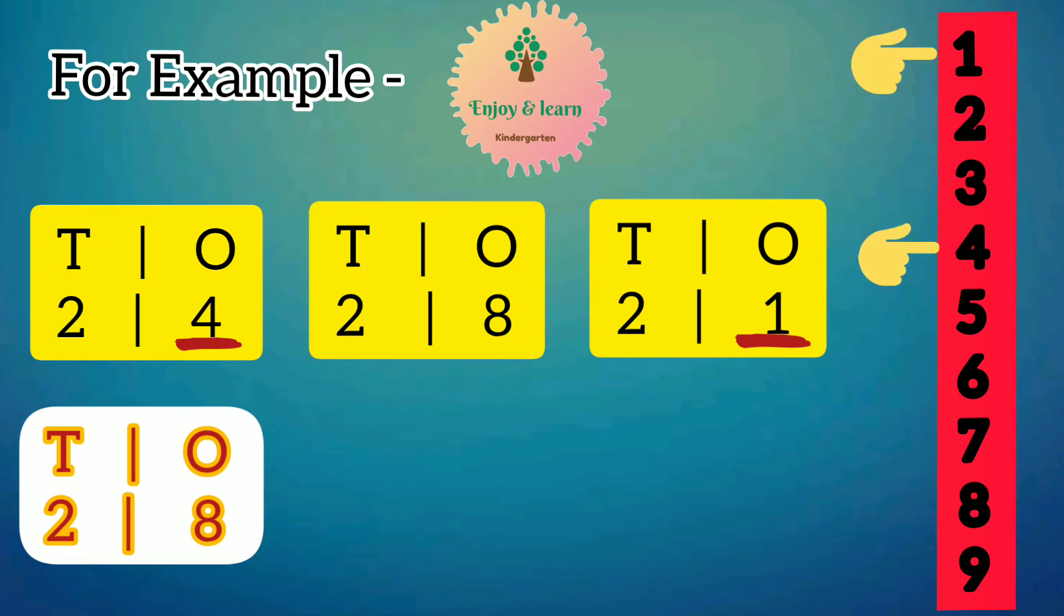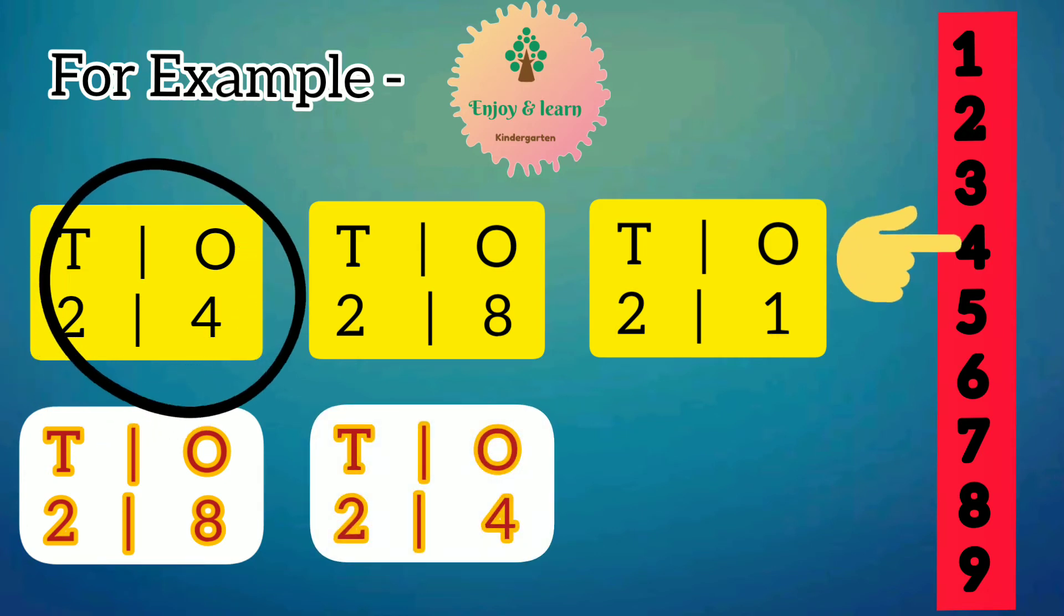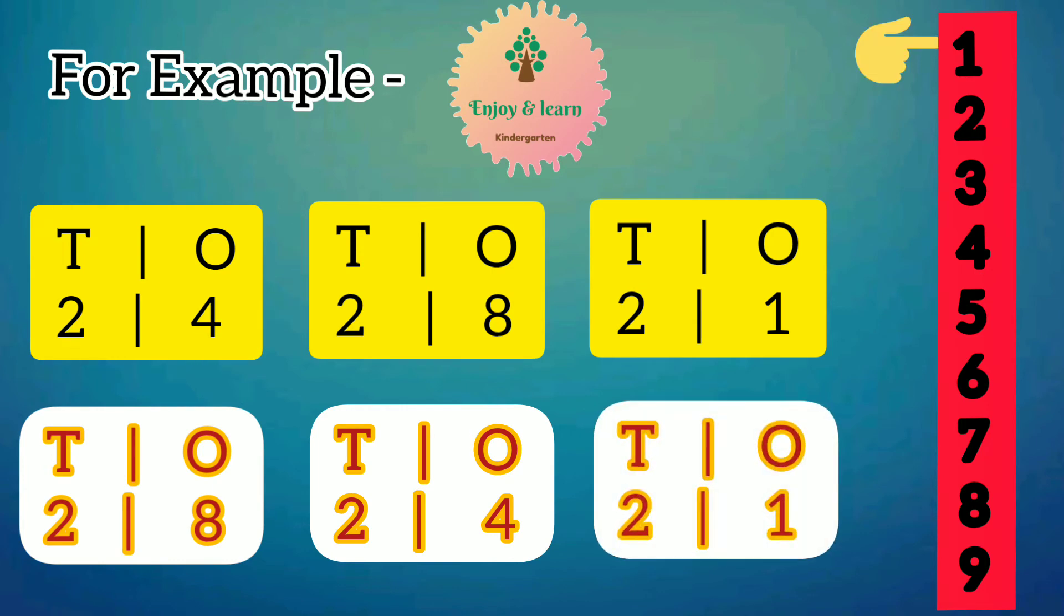Next, from number 4 and 1, 4 is greater than 1. So number 24 will be kept at second place, and at last number 21, which is the smallest, will be placed.